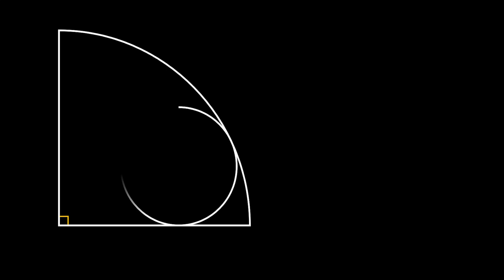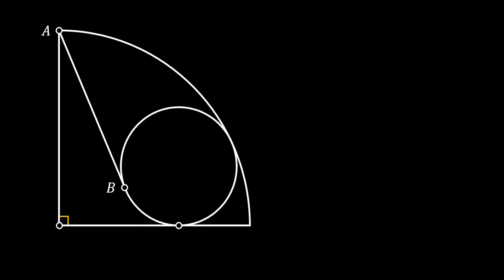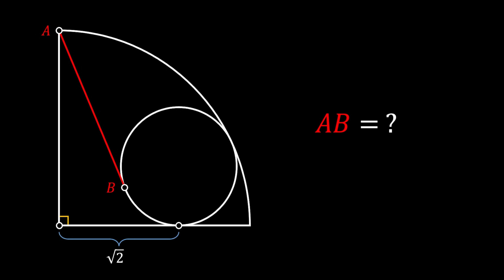First, let's start with a quarter circle. In it we will inscribe one full circle so that it touches the arc of our quarter circle and its bottom radius. Now from the upper left corner of the quarter circle we will pull the tangent line to our smaller circle and label the points of this tangent line as A and B. If we know that the distance between the center of our quarter circle and its bottom intersection point with the inscribed circle is equal to the square root of 2, is it possible to find the length of this red tangent line AB?